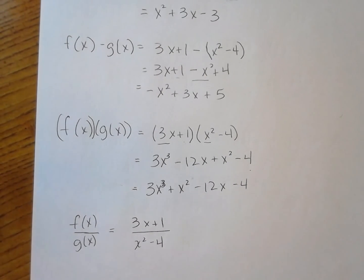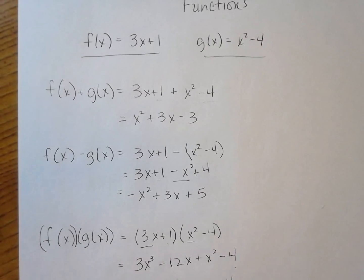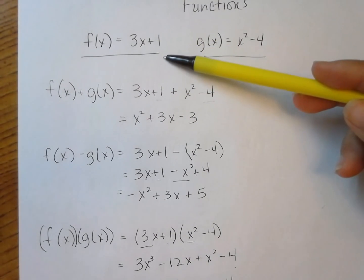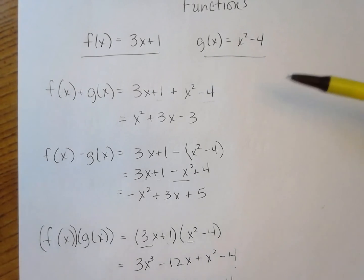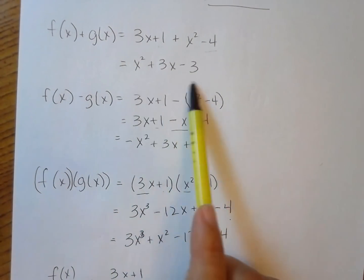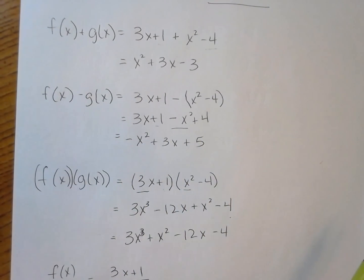Something I haven't spoken about yet is the domain of these functions. My original f and g have no domain restrictions — f is a linear function with no square root and no division by a variable, and the same with g. So both have a domain of all real numbers. When I combine f and g with addition, subtraction, and multiplication, I don't get any additional domain restrictions, since I'm not getting any square roots or division by a variable.